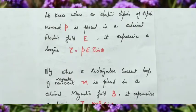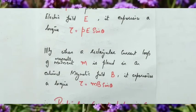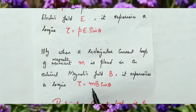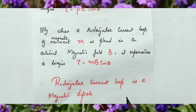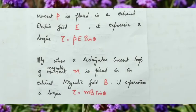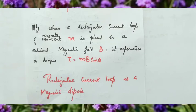We know that when an electric dipole of dipole moment P is placed in an external electric field E, it experiences a torque τ = PE sinθ. Similarly, when a rectangular current loop of magnetic moment M is placed in external magnetic field B, it experiences a torque τ = MB sinθ. Because these expressions are in the same form, we conclude that a rectangular current loop is a magnetic dipole.